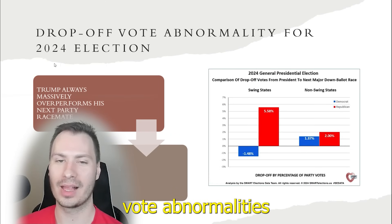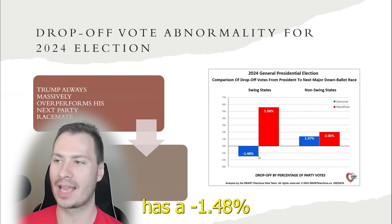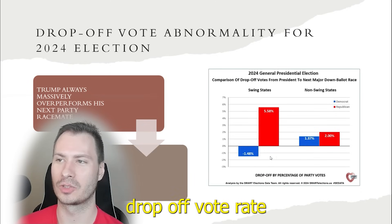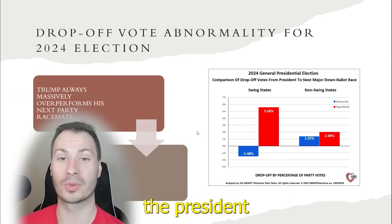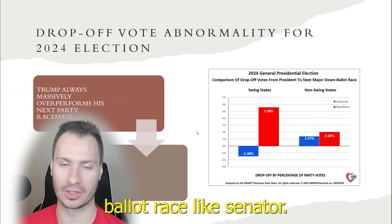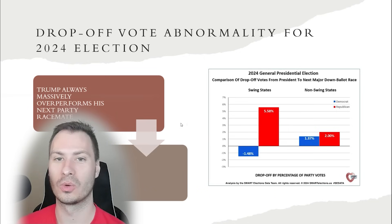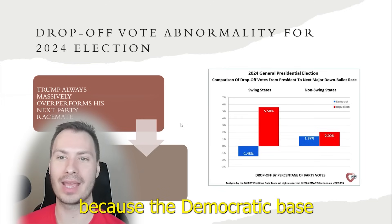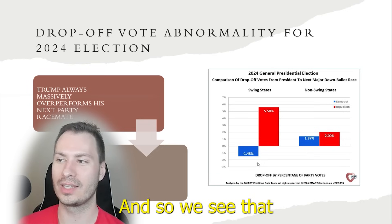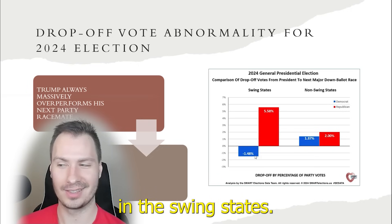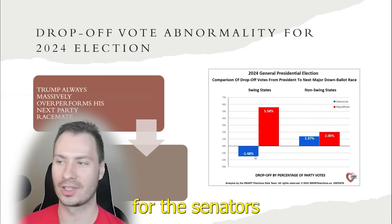We see drop-off vote abnormalities in the seven swing states versus non-swing states. For example, candidate Harris of the Democrats has a negative 1.48% drop-off vote rate in the swing states. A drop-off vote rate is how many votes the president got compared to the next down-ballot race, like senator. It gives us an estimate of how popular a candidate is, because the Democratic base will vote for either of those candidates based on how much they like them. We see that Harris on average was unliked in the swing states — she had a negative drop-off vote rate, meaning more people voted for Democratic senators than for Harris.